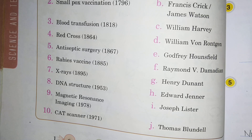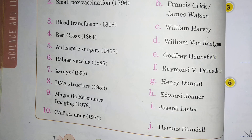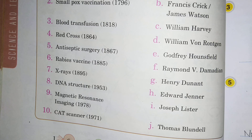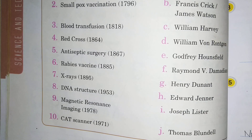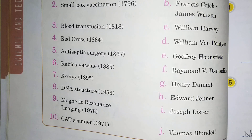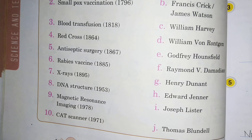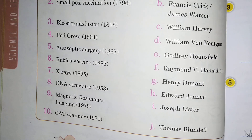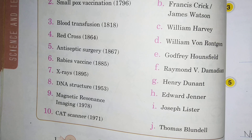Next is rabies vaccine. Jho anti-rabies injections lagay jaate hai jab koi dog aapko bite kar lieta hai. 1885 mein isko invent kya tha, that is option A, Louis Pasteur.